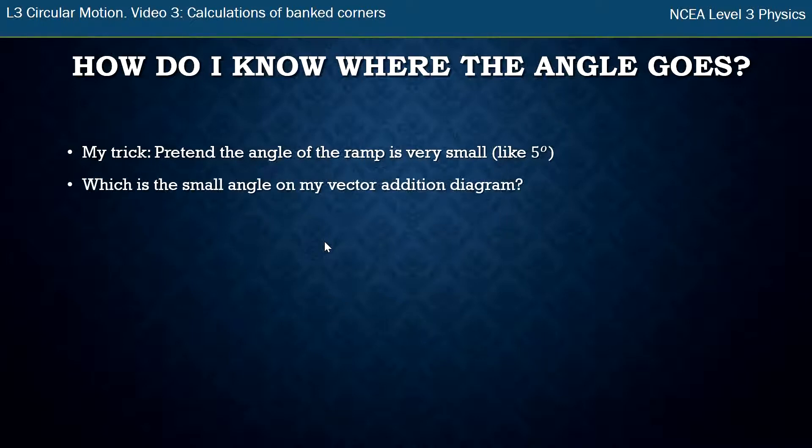So what I say is, when I've got my vector addition diagram, which is my really small angle. So as an example, let's pretend the road is 5 degrees like this. So you can see that very small angle in there. The other angles are much bigger. Draw my forces on there and draw a little vector addition diagram, and then I say, I know one of these angles is 5 degrees. Which of the angles there is 5 degrees? And it should be really obvious which is the really small angle, and it's that one down the bottom.